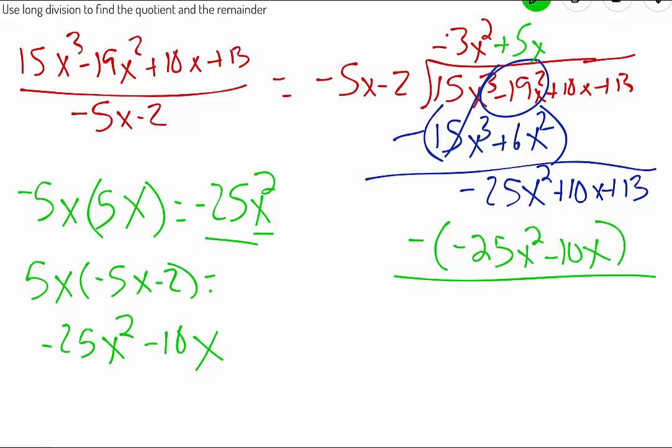When we subtract negative 25 minus negative 25, keep in mind that is the double negative rule. That is going to cancel out. 10x minus negative 10x makes that a positive 20x. Drop down that plus 13.